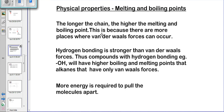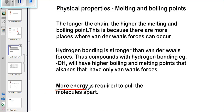Continuing with our organic series, we are looking at the physical properties of organic compounds — melting and boiling points. The main points: when will you have a greater melting and boiling point and when will it be less? The bottom line is that if more energy is required to break the bonds, then the melting and boiling point will be higher. If you need less energy, the melting and boiling points will be lower.